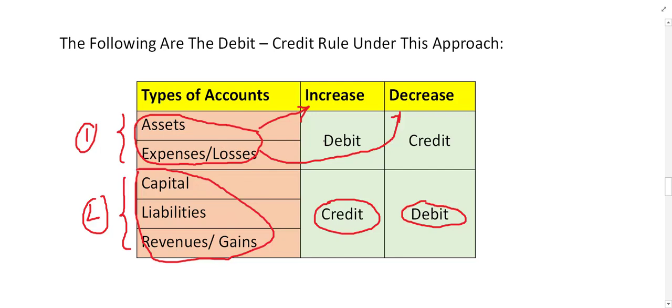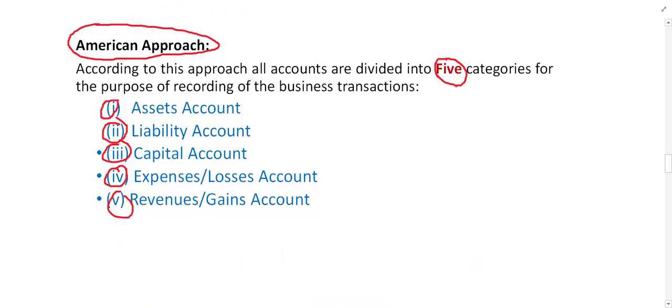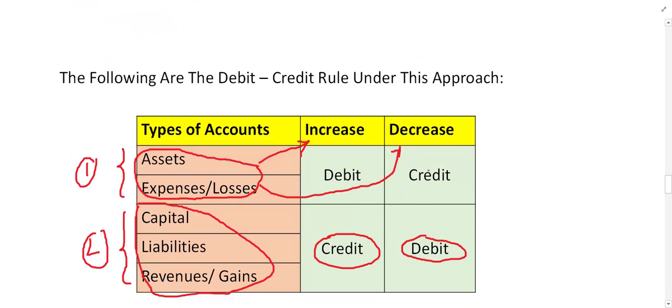So the two groups are opposite of each other: Group 1 — if increase, debit; if decrease, credit. Group 2 — if increase, credit; if decrease, debit. For example, there is five lakh capital in the business and the owner introduces an additional two lakh. Capital increases, so the capital account becomes credit. This is the American approach, where all accounts are divided into five types.